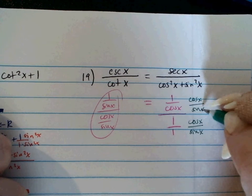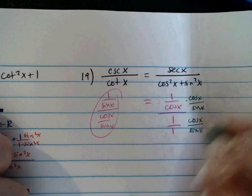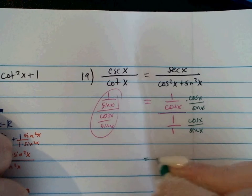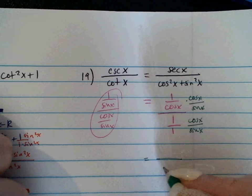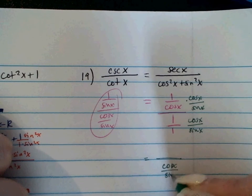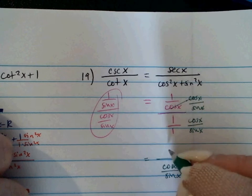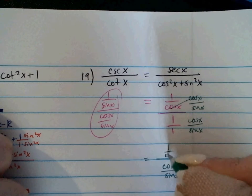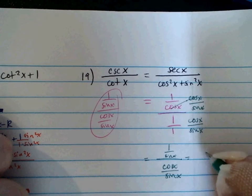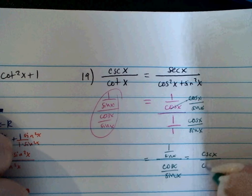In the denominator, I do get what I need — the fraction cosine over sine. And in the numerator, the cosines cancel, leaving me with 1 over sine, which equals cosecant over cotangent. And there we go.